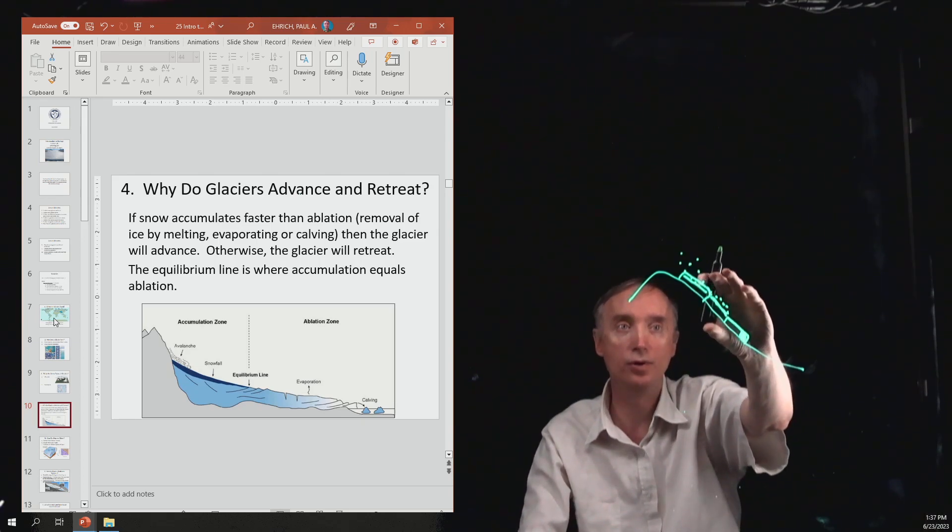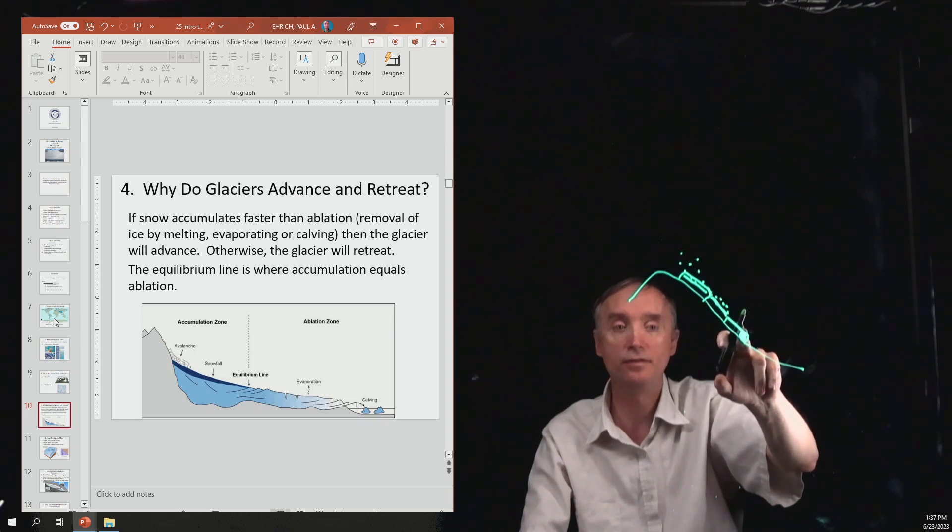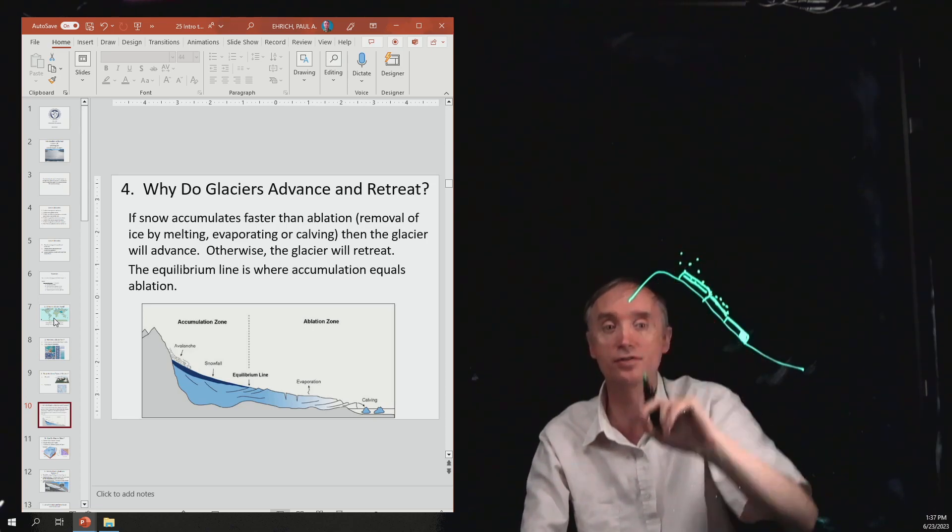If the rate at which the glacier is disappearing is faster than the rate at which it's forming up here, it's going to retreat.